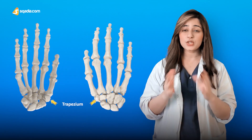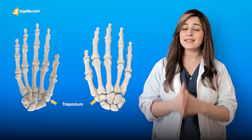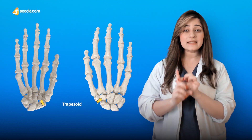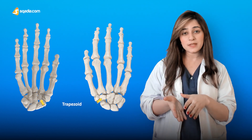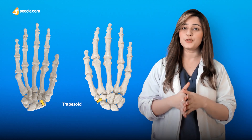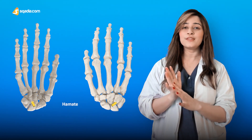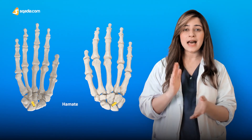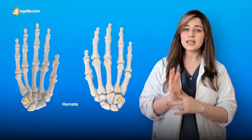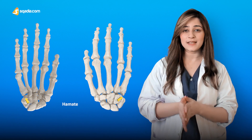At the proximal end, each metacarpal articulates with the distal row of the carpal bones, and at the distal end, each metacarpal head articulates with the base of its corresponding proximal phalanx. Specifically: the thumb metacarpal articulates with the trapezium through a saddle-shaped synovial joint; the index metacarpal articulates with the trapezoid as well as the trapezium through a small tubercle; the middle metacarpal articulates with the capitate; the ring metacarpal articulates with the hamate as well as a small part of the capitate; and the little metacarpal articulates with the hamate bone.